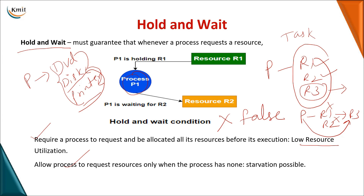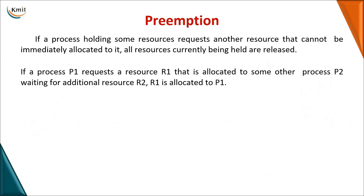With the second approach, for example, a process acquires a DVD and disk at the first stage. After finishing that job, it releases both and tries to acquire the disk and printer again. By the time it releases and tries to reacquire the disk, it might have been allocated to some other process, leading to a starvation problem. So making hold and wait false is also practically very difficult.